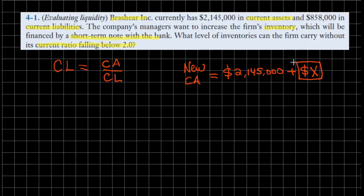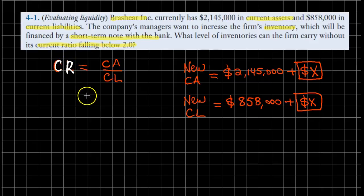After the financing, our new current liabilities would also change. It would increase from $858,000 to $858,000 plus X dollars. Now we can go back into our formula for the current ratio. That would be equal to our current assets, this figure here that we just made note.